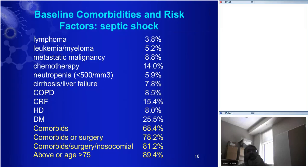Why do we miss as often as we do? The main thing is that all of us know there are certain groups who need broad-spectrum therapy — the classically immunosuppressed: lymphoma, leukemia, myeloma, metastatic malignancy, chemotherapy, neutropenia. But a lot of the people at the tip of the spear — the first contact with septic shock patients in the ER or residents on the ward — don't always realize that chronic organ failure, cirrhosis, COPD, chronic renal failure, hemodialysis, and diabetes mellitus are patients who, though not immunosuppressed per se, are immunocompromised in a broader sense and also require broad-spectrum therapy.